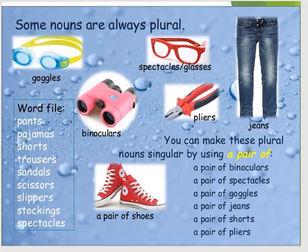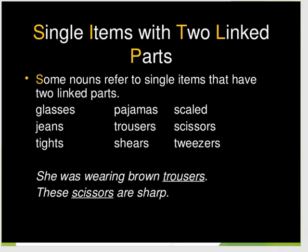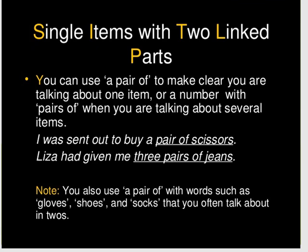And there are some nouns that are always in plural: pants, pajamas, shorts, trousers, sandals, scissors, slippers, stockings, spectacles, pliers, jeans. Single items with two linked parts are also always in plural: glasses, jeans, shorts, pants, boots, tights, spectacles, scales, tweezers. You can use 'a pair of' to make clear you are talking about one item, or 'a number with pairs of' when talking about several items. For example: I was sent out to buy a pair of scissors. But when we say three, we must add 'pairs': three pairs of jeans.